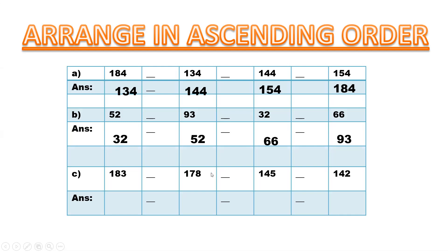Did you understand? Always the small number first. Starting with 3, then 5, then 6, then 9. So we say 32, 52, 66, 93. Did you understand the sequence, children?